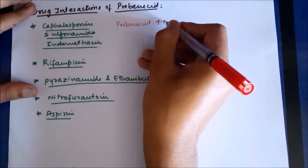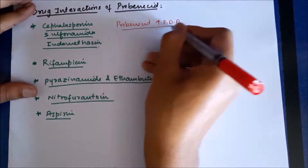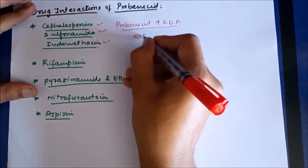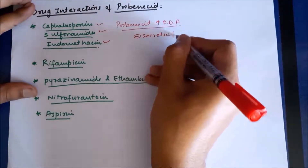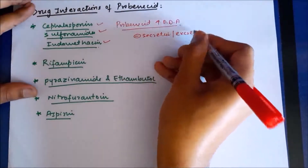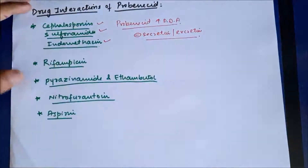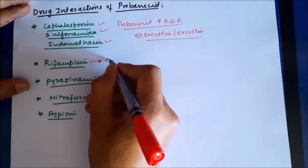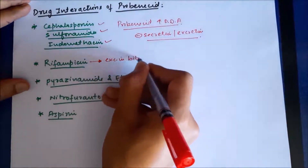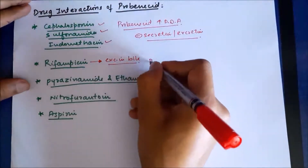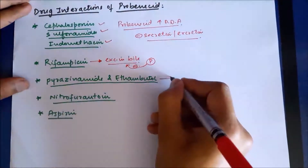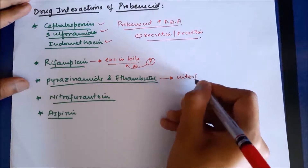Drug interactions of probenecid: along with penicillin, probenecid also inhibits the secretion of drugs such as frusemide, sulfonamides, and indomethacin, decreasing their excretion and increasing their duration of action. It also decreases the excretion of rifampicin in bile, which can prolong its action.